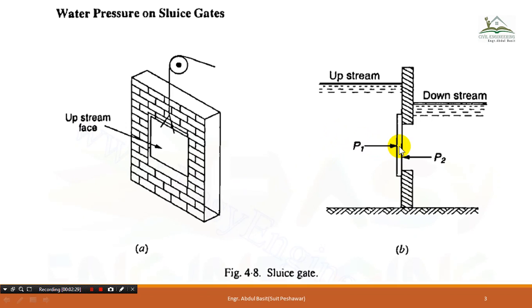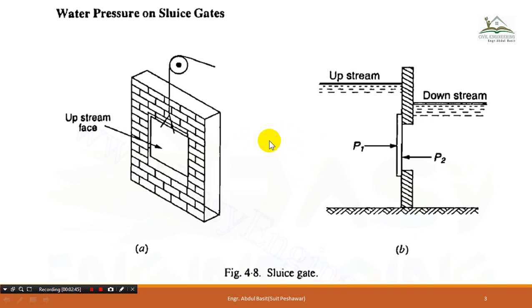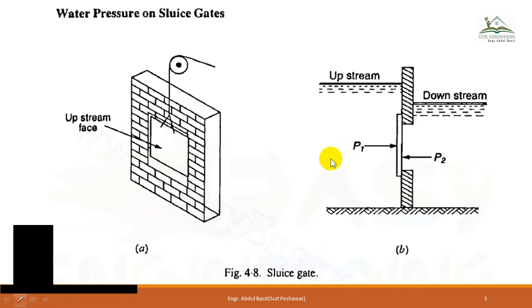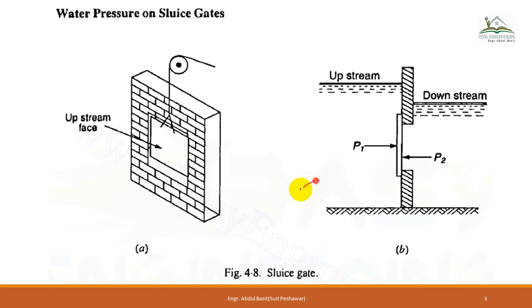Coming towards the first situation: sluice gates. A sluice gate is a gate constructed in the lower half of the dam structure, where silt accumulates near to it. The situation is like a pond — the water is completely still with minimum velocity, so all suspended particles settle down near this position.